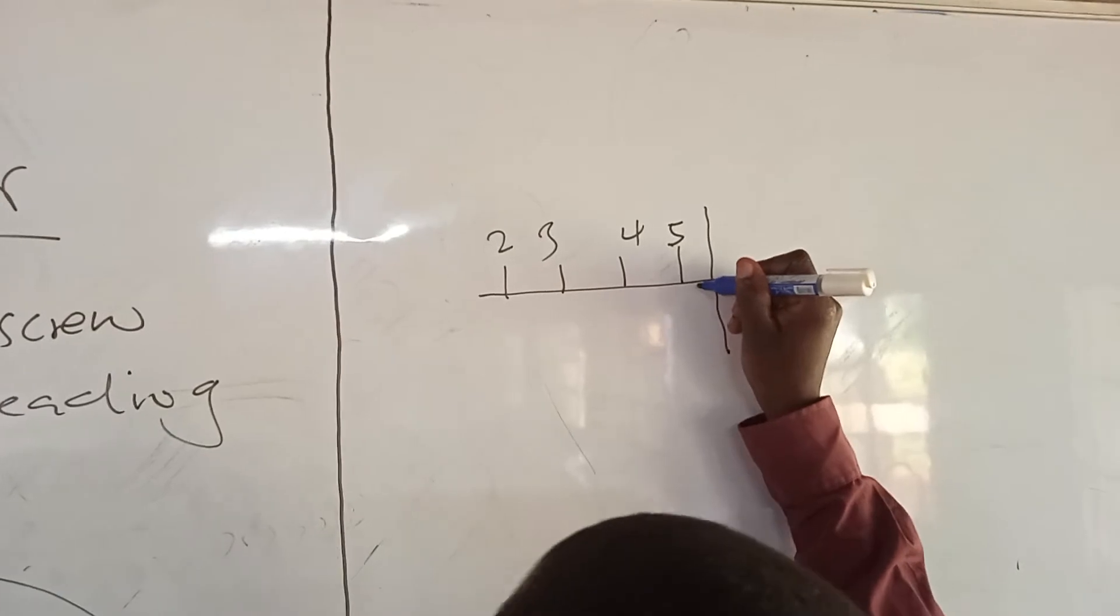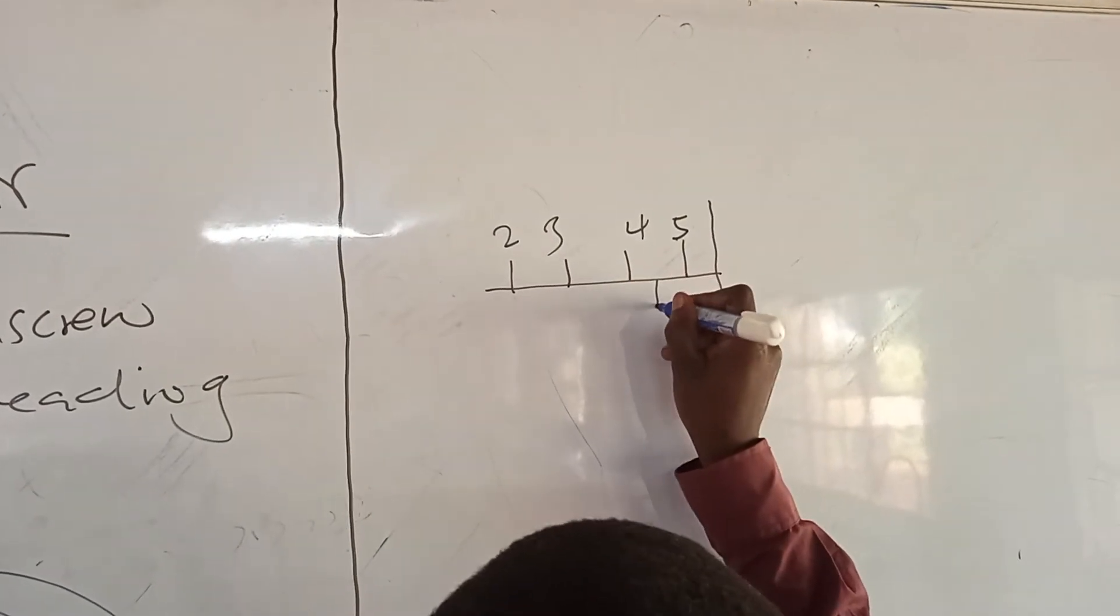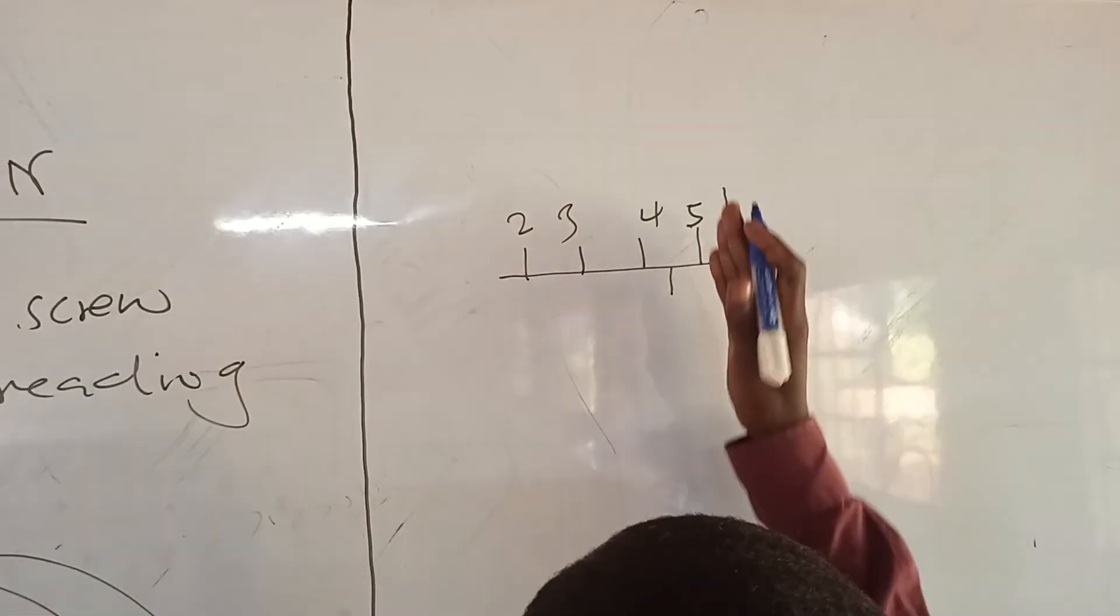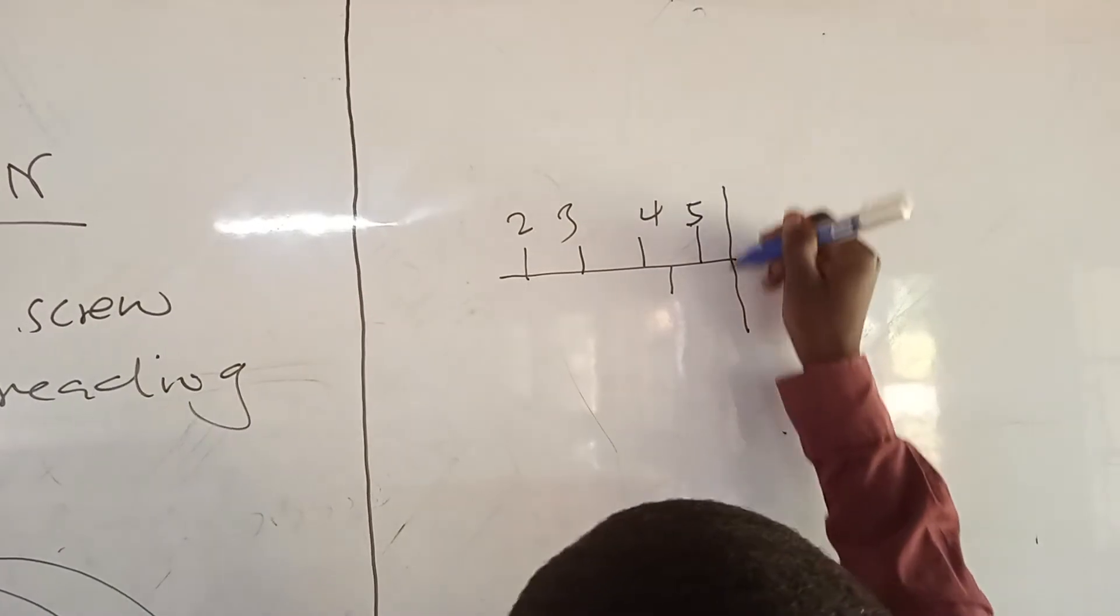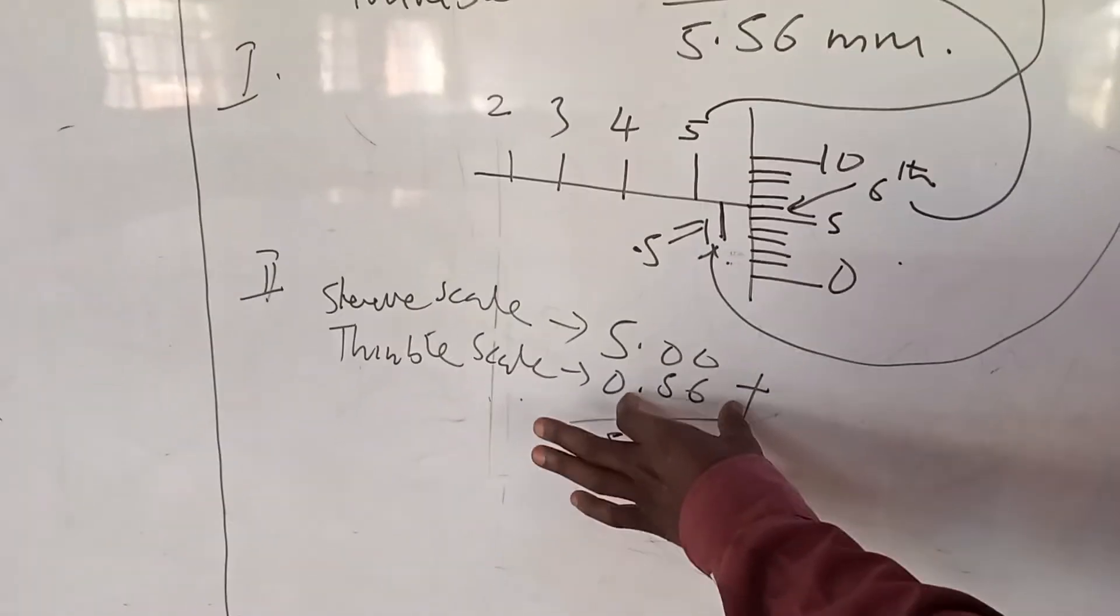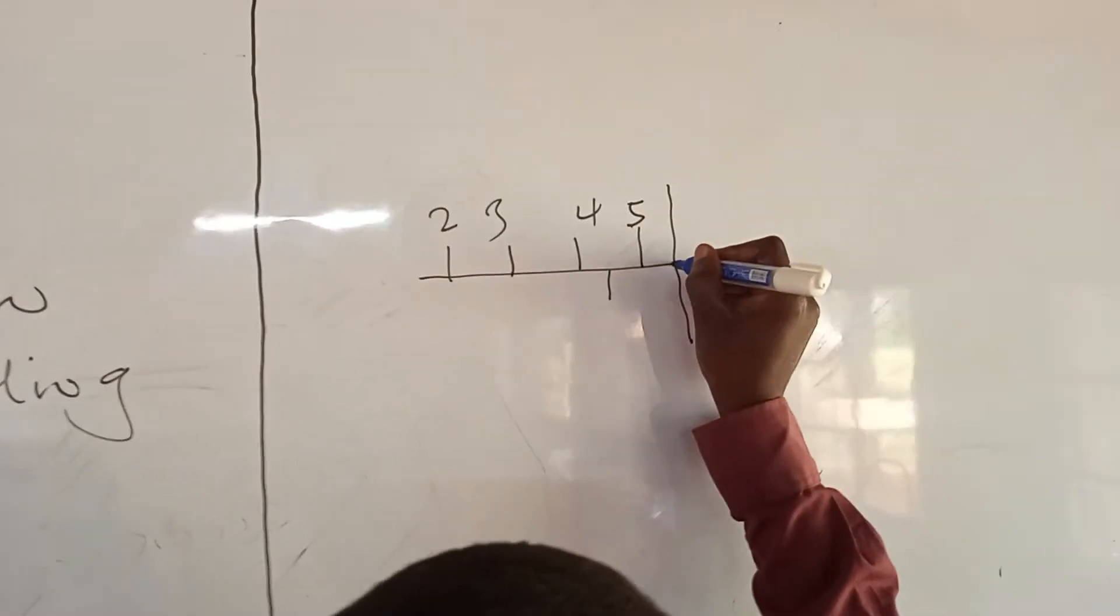But since we don't have 0.5, there is not going to be any mark in front of 5, but only before 5. So this is 5.0, there is no mark below it.